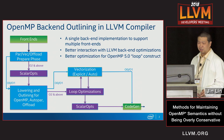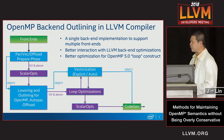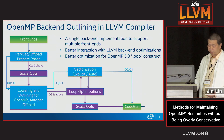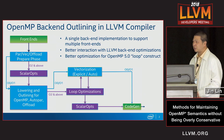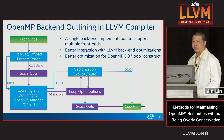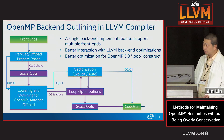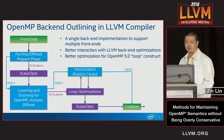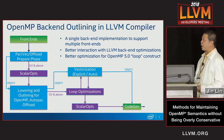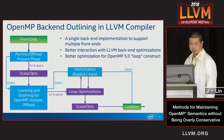And then we have vectorization, loop optimizations, and scalar optimization. Finally, the code generation. In the community branch, the OpenMP code generation has to be implemented in the clang front-end. Compared to the front-end outlining, the back-end outlining has the following advantages: we provide a single back-end implementation to support multiple front-ends.